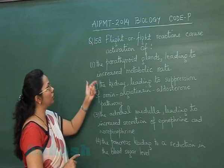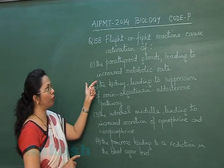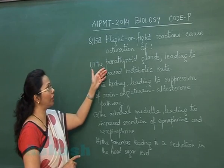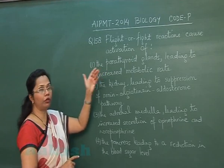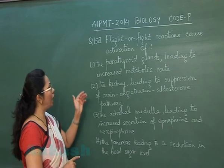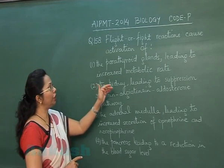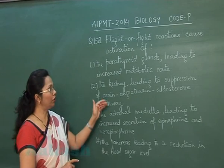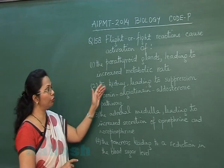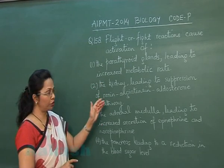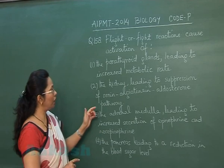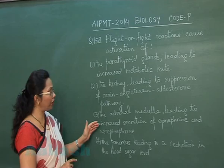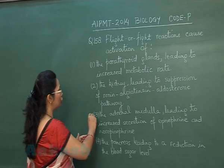Looking at the options: parathyroid glands leading to increased metabolic rate — this is not correct, as metabolic rate is regulated by the thyroid. The kidney leading to suppression of the renin-angiotensin-aldosterone pathway — this also does not happen due to sympathetic stimulation.